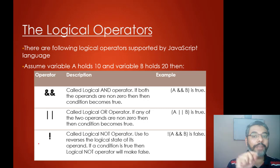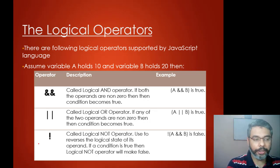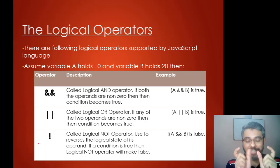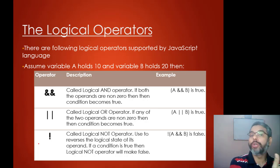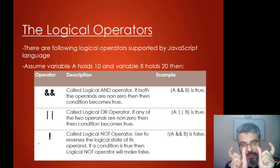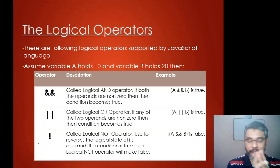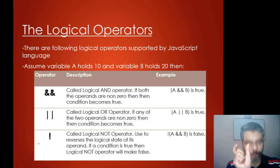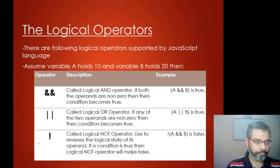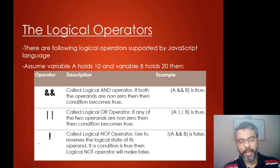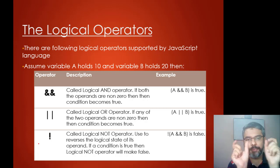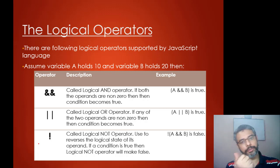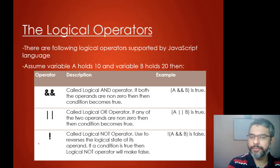We use the AND operator, OR operator, and NOT operator. The AND operator is very strict — both conditions need to be true for the result to be true; if any one condition is false, it becomes false. The OR operator, represented by a double pipe sign, is more relaxed — if any one condition is true, the result is true. The NOT operator reverses the decision: if condition A is true, NOT makes it false.